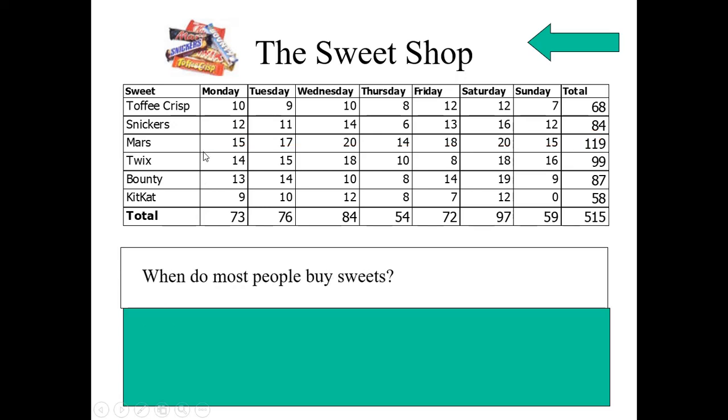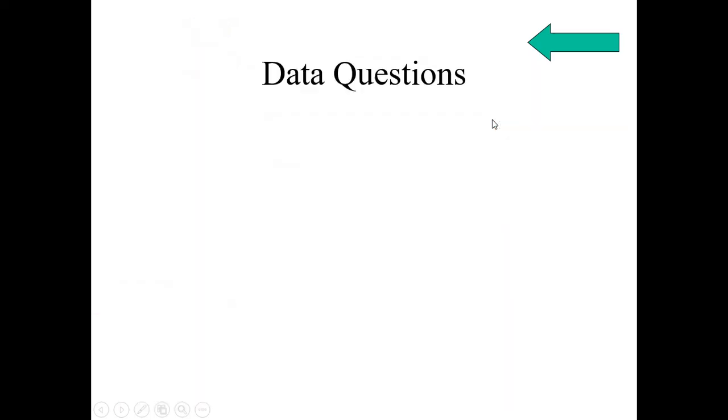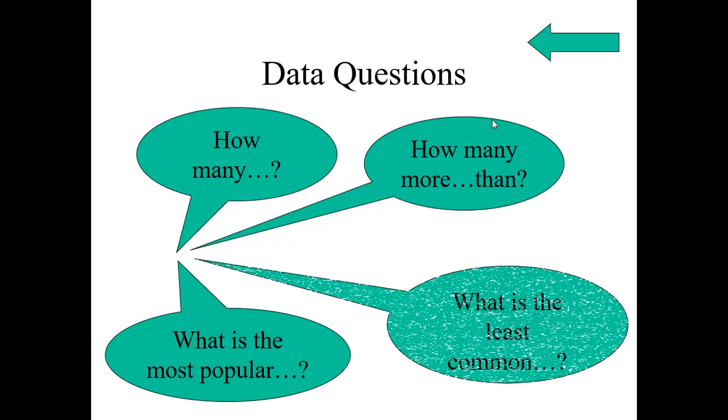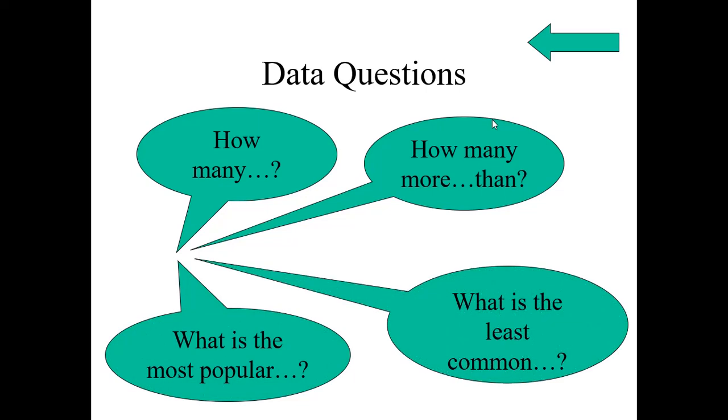Now, when do most people buy sweets here? Means on Monday or Wednesday or Thursday like that. See the last row here. Highest one is 97 in this row. Hence, Saturday, people buy more sweets. Let us come to what questions we discussed. How many? How many more than? What is the most popular? What is the least common?